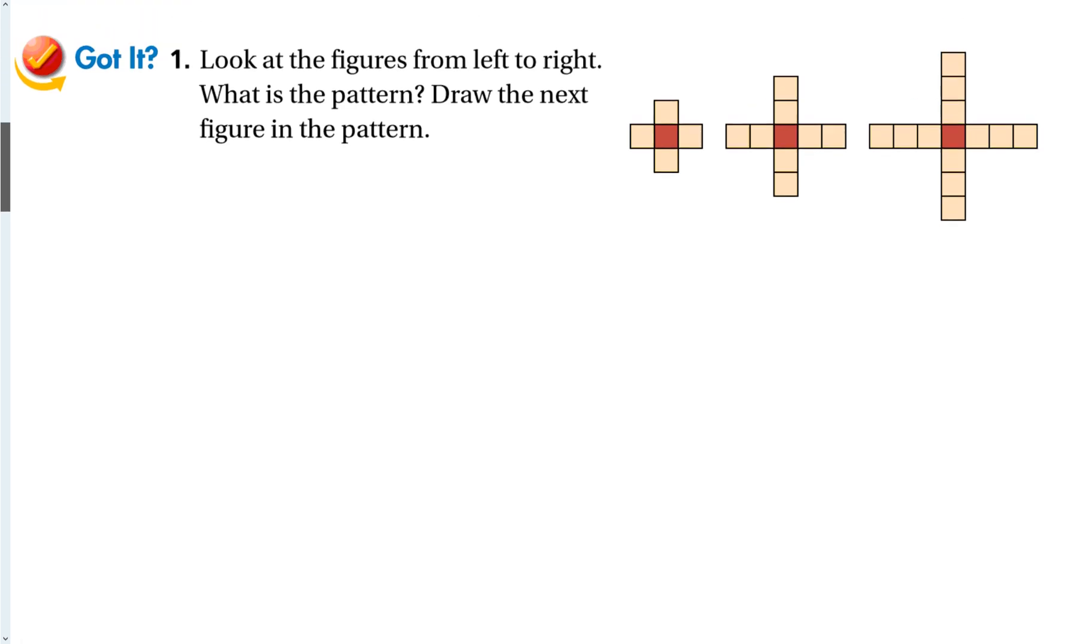Let's look at this pattern. So look at the figures from left to right. What's the pattern? And draw the next figure. This one's not as fancy as the one before with specific shapes, but I can definitely see the pattern. This one starts with a red block in the center, and then one block on each side, then two, then three.